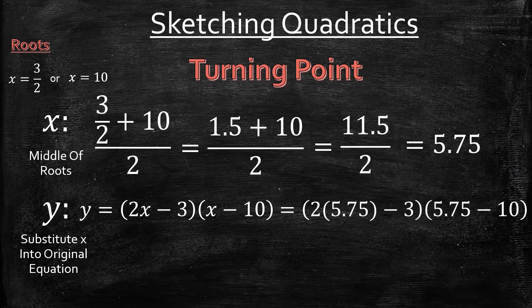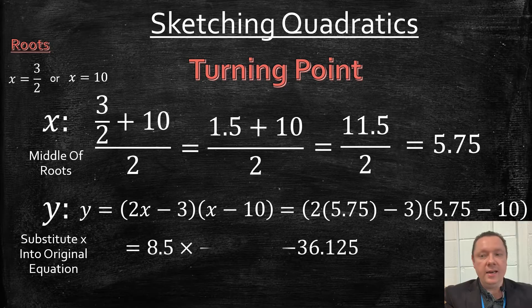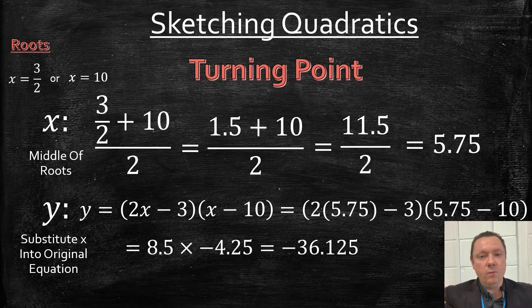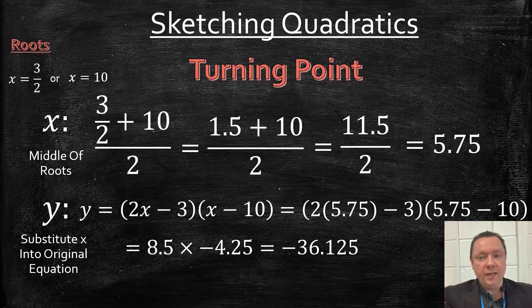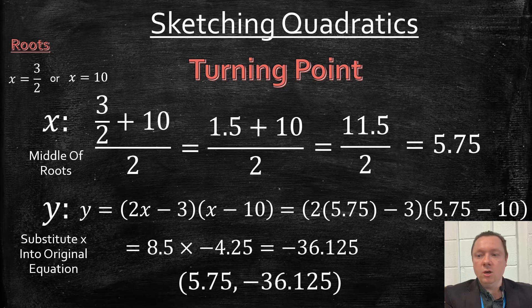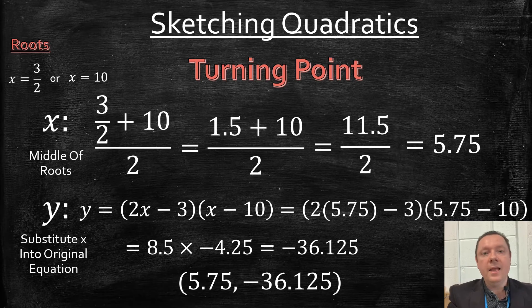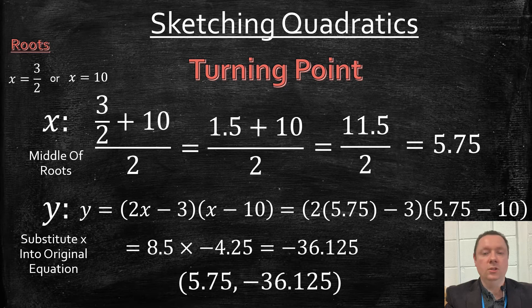So x is 5.75. I've got 2(5.75) - 3 and I've also got 5.75 - 10. Working out each bracket, we get 8.5 times -4.25. Using a calculator, we get -36.125. So our turning point is (5.75, -36.125).